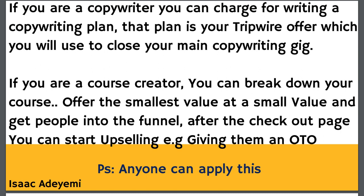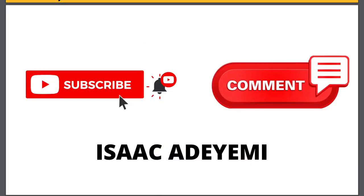If you're a course creator, you can break your course down into its smallest valuable unit. For instance, a book could be your tripwire — offer it for five or ten dollars, or even give it away free and charge for shipping. When people reach the checkout page, you start giving them upsells and one-time offers. This works very well for course creators. Remember, anyone can apply this strategy and it is definitely going to work for you. If you got value, comment below and don't forget to subscribe and turn on notifications.